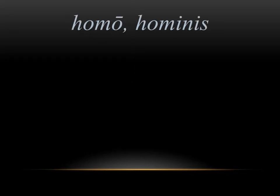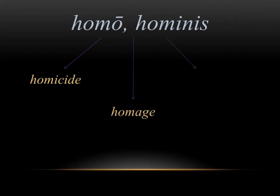Homo hominis in Latin means man, and in English we get words like homicide, homage, and homo sapiens. All three of these have to do with the word man. Homo sapiens means wise man, referring to our ancestors as humans. Homicide means literally to kill a man, which is another word for murder. So if you think of all three of these words in English, you can tell they're holding on to that Latin root of man.